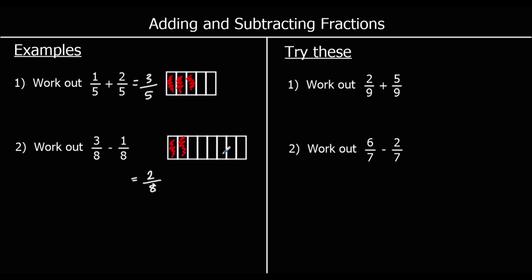If we wanted to simplify this answer: two and eight are both even — they're both in the two times table — so we can halve the top and the bottom and say that two-eighths is the same as one-quarter.